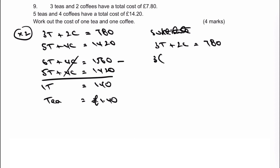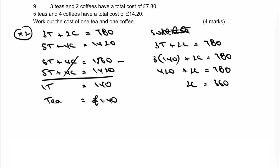So I know my value of my tea. I'm going to keep it in pence — it just makes my life a little bit easier for the calculations. That's going to be 420 plus 2C equals 780. If I take 420 from both sides, I get 2C equals 360, and therefore C equals 180. So one coffee, put it back into pounds, is going to equal £1.80.